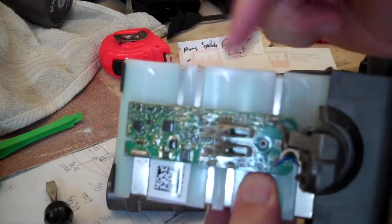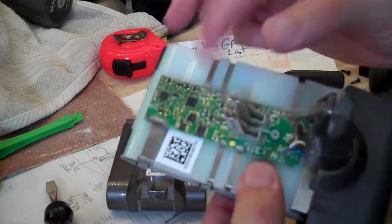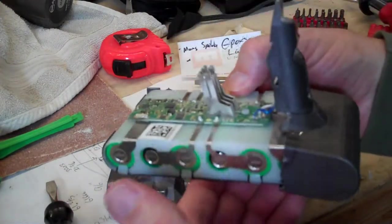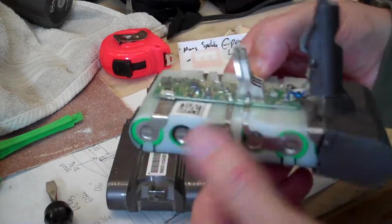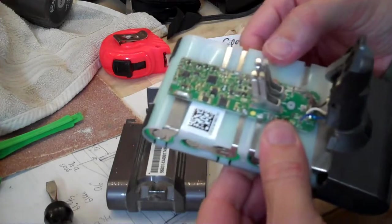You can see it has sense leads and they're pretty hefty sense leads to each spot in the series pack. So it could definitely be doing some type of balance charging. It certainly can do sensing of each individual cell's voltage.